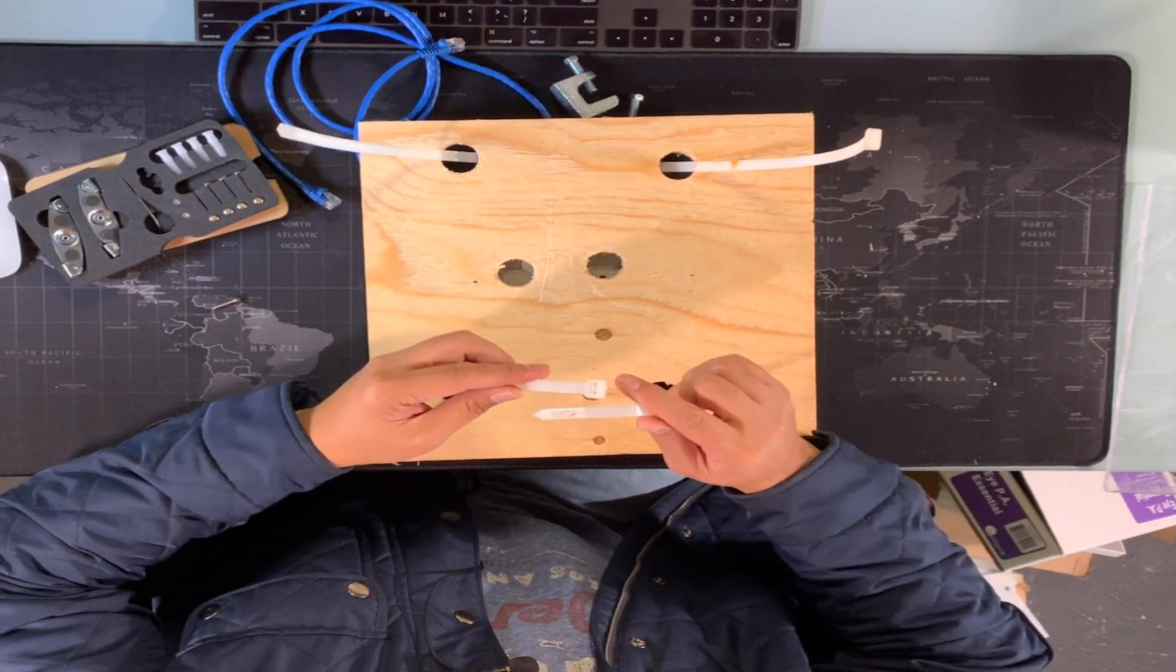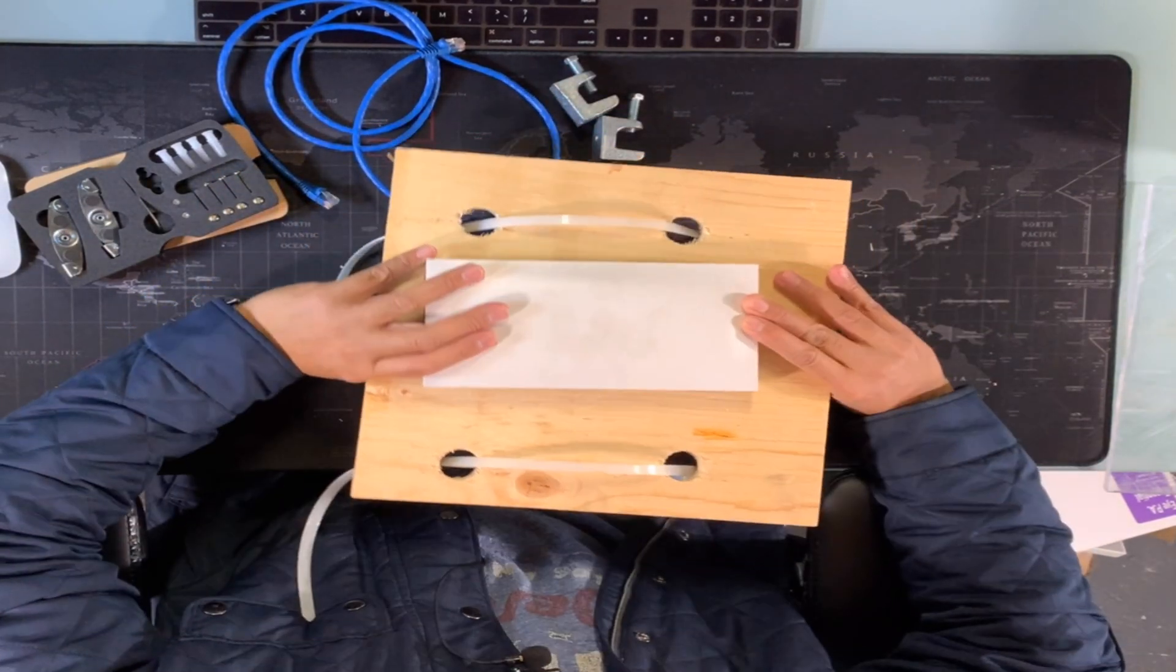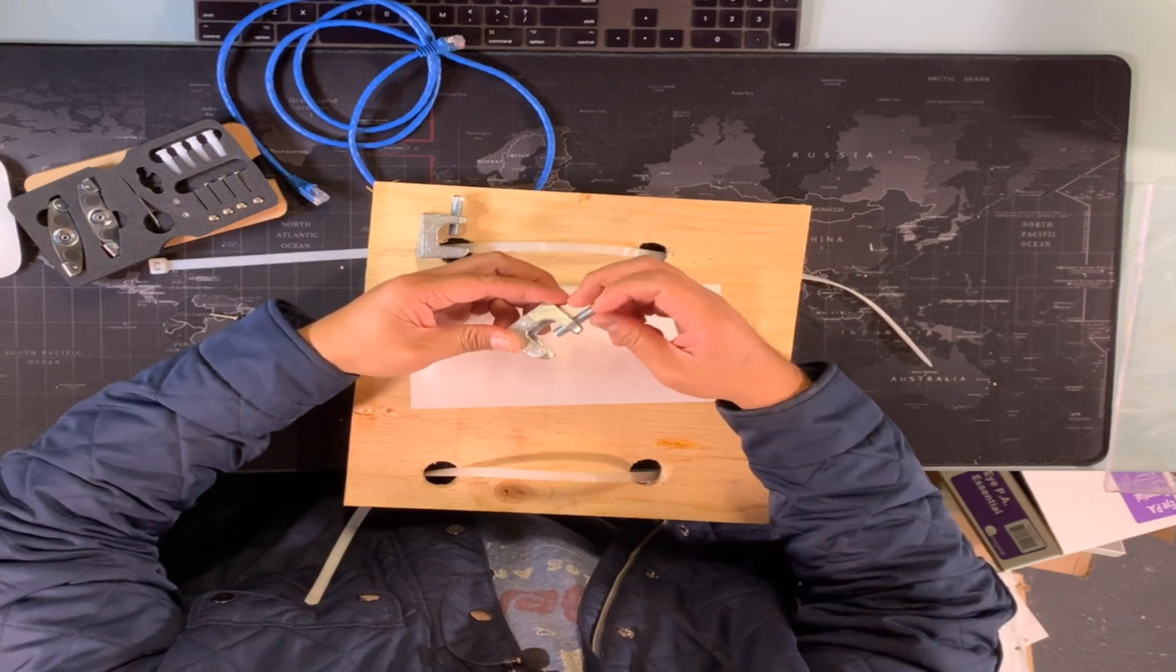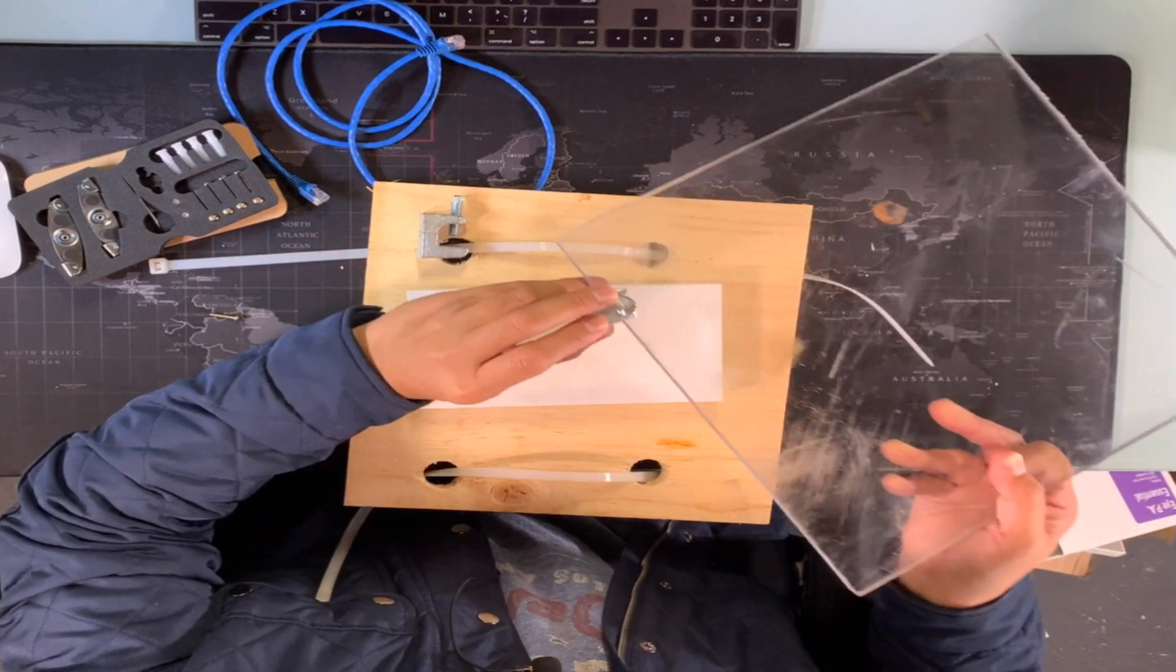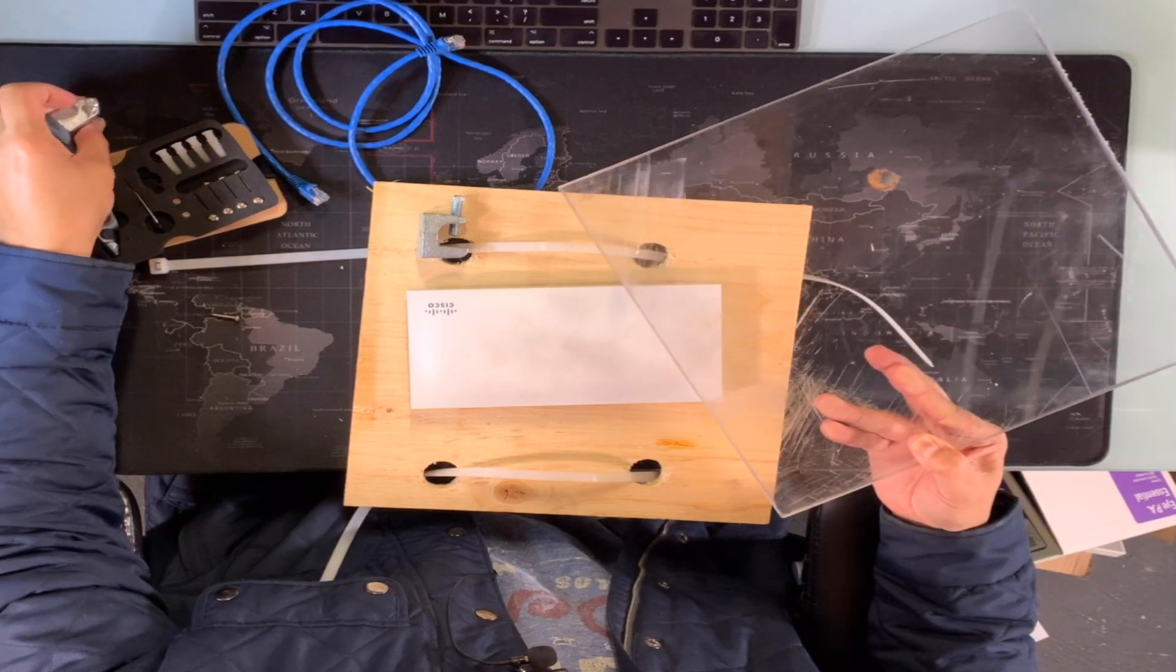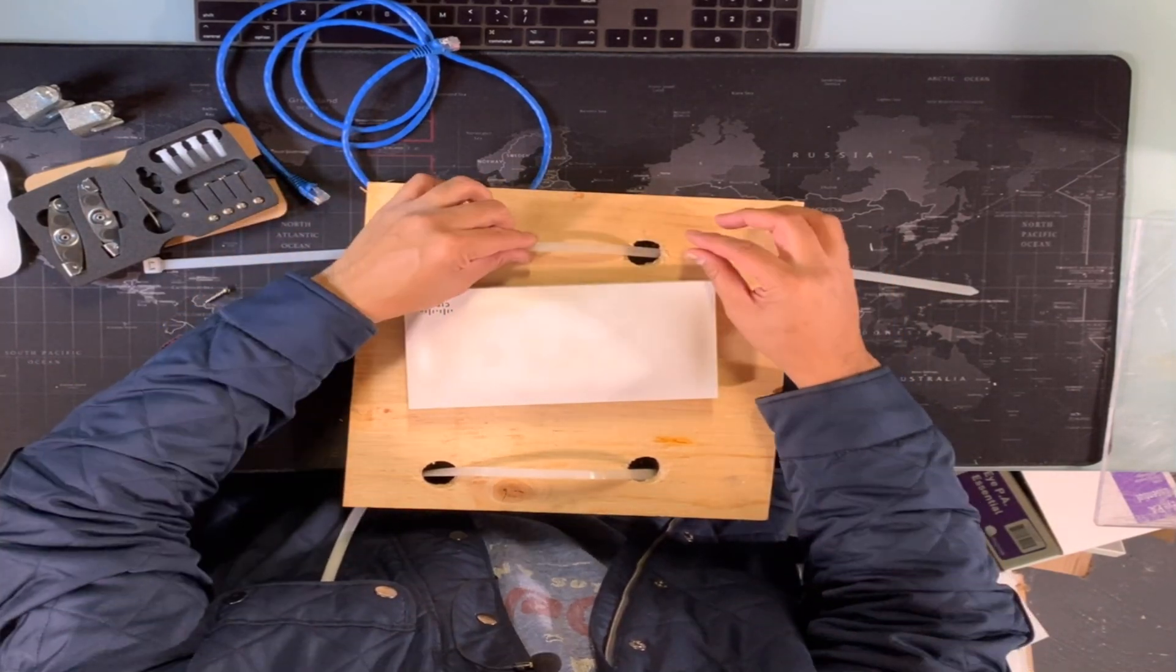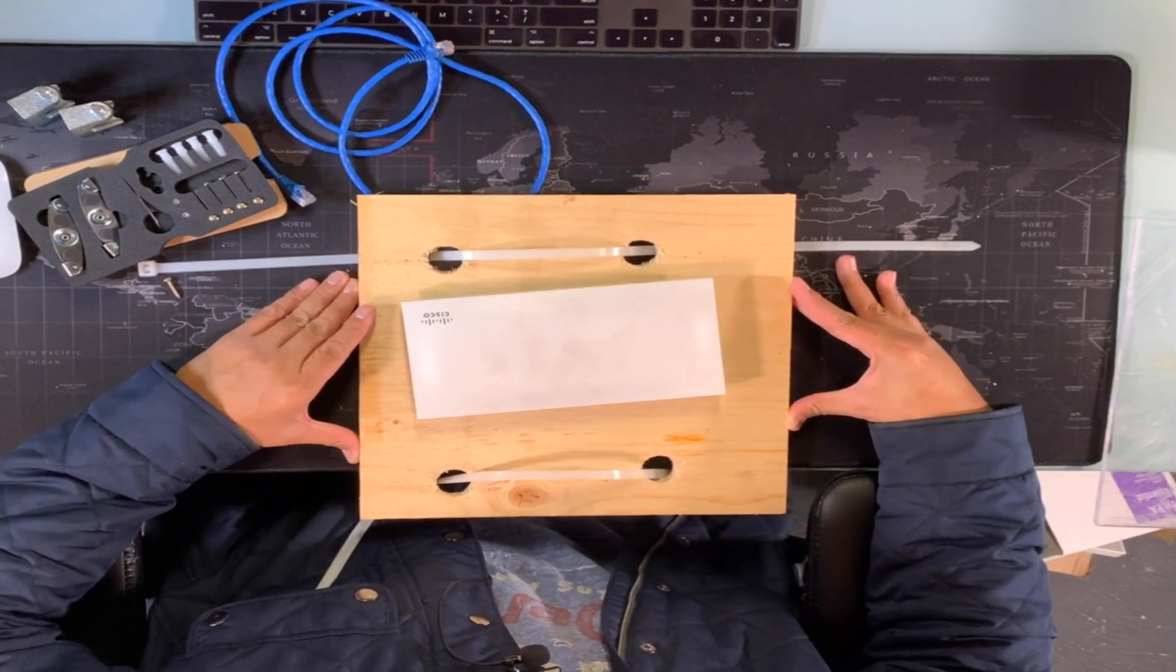That's typically how we do a lot of our installations. I know a lot of installers use these steel clips. Now with these clips or these mounting brackets they're pretty sturdy, but it just really depends on how thick your board is. I just find it easier to use these. I've had access points installed with this type of scenario and they're still up there ten years after.